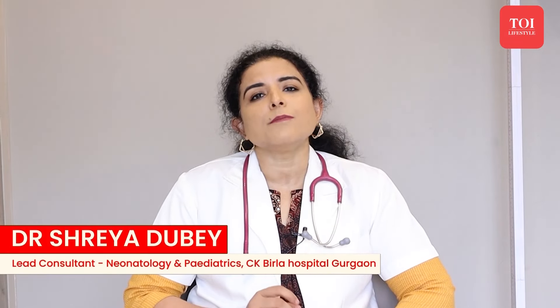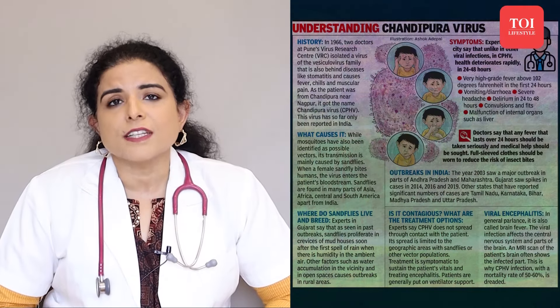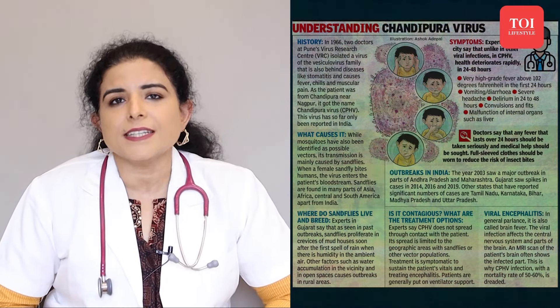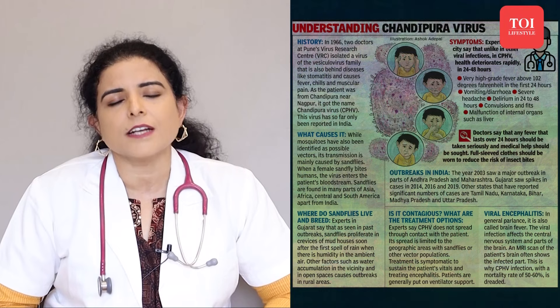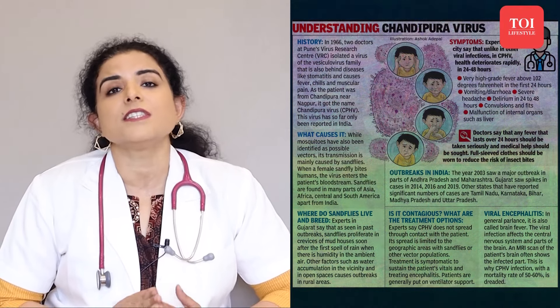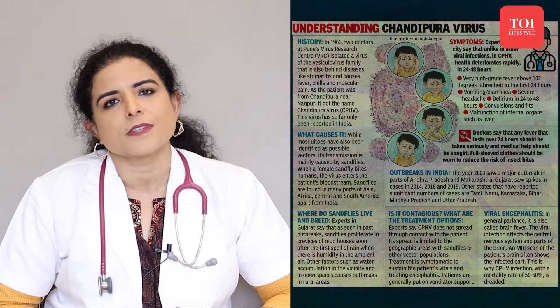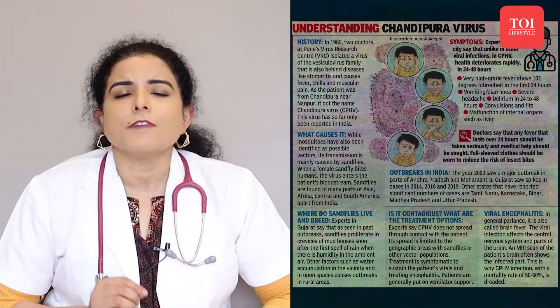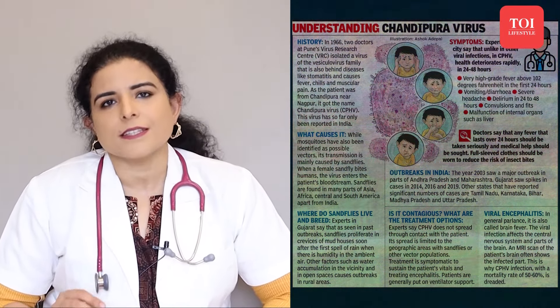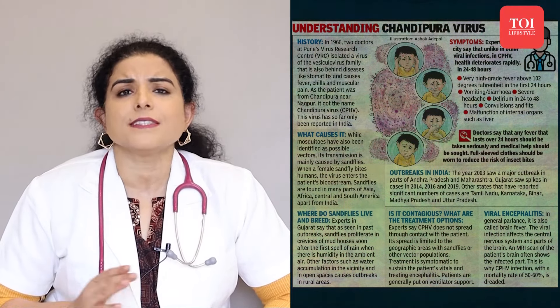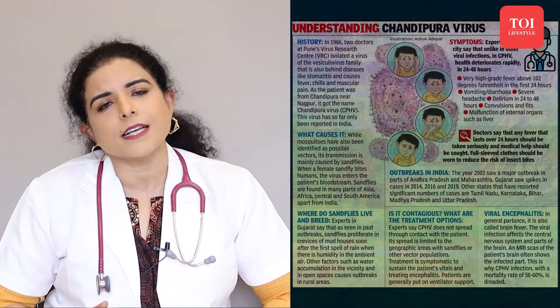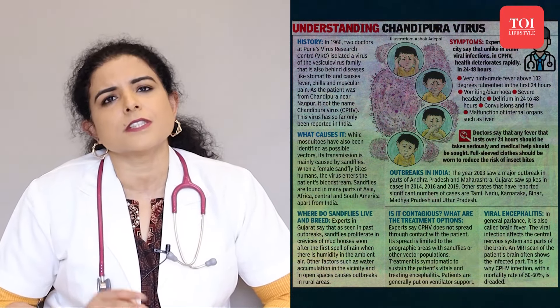The Chandipura virus is a member of the rhabdoviridae family, which includes many other viruses, one of which causes rabies. This virus was first discovered in the mid-1960s and was named after the Chandipura village in Maharashtra. It is a vector-borne virus infection and is transmitted by sandflies, ticks, and sometimes mosquitoes.